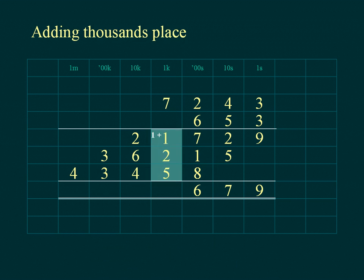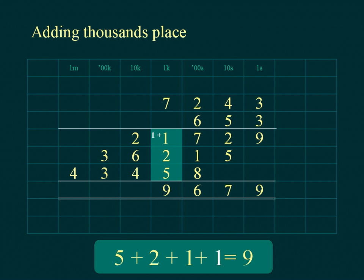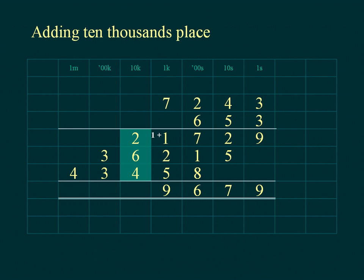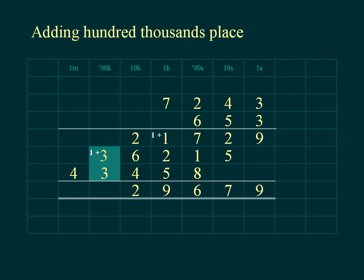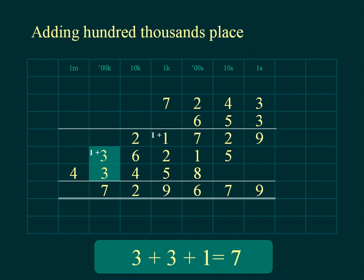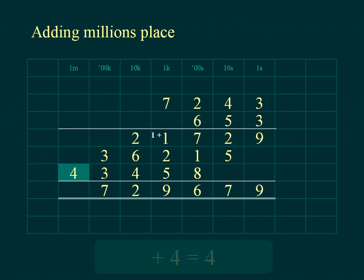Add the thousands column, then add the tens of thousands column. Place the units of the result below the line in the ten thousands place and place the tens of the result under the hundred thousands place. Add the hundred thousands column and place the sum under the hundred thousands on the total line.